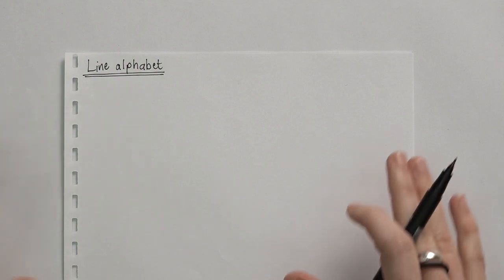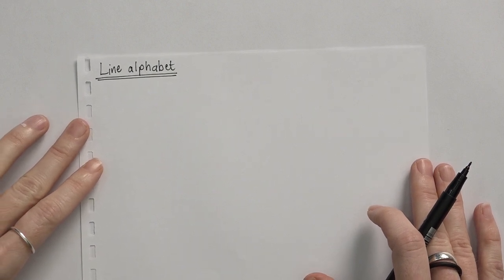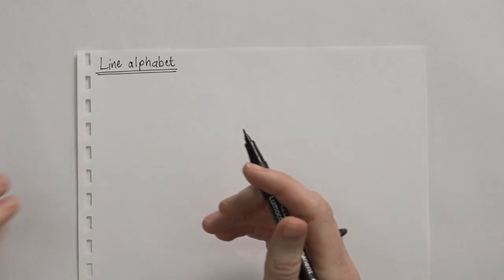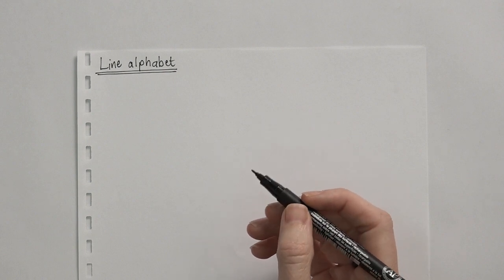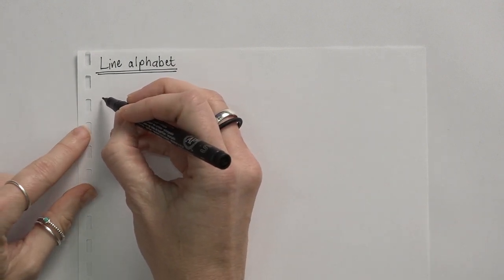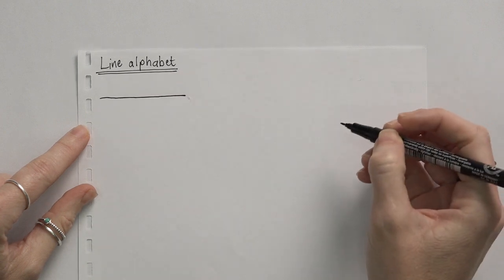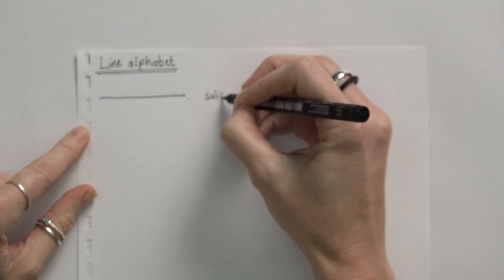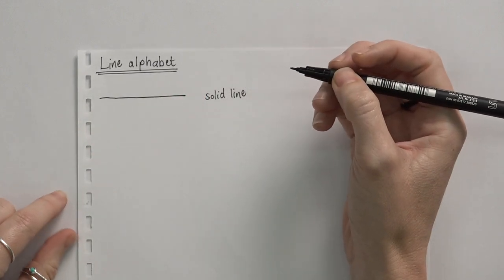In this tutorial we're going to look at the line alphabet. Typically when we are drawing, there are a couple of lines that we use, and it's important to know what each of these look like and when they are used. The first one we'll look at is just a normal solid line — and we use this when we are drawing any outside part of the component.